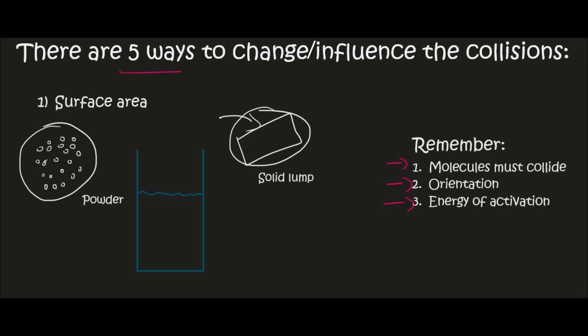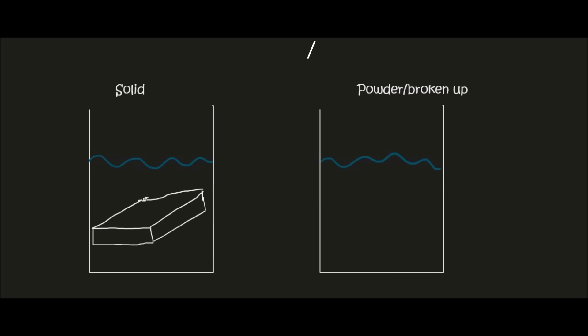With the solid, it's only the particles on the very outside that can be influenced by the surrounding water. The particles in the middle won't be affected until all of the solid around them has been dissolved first. Whereas if we break everything up, each particle becomes exposed to the water, including particles that were originally not exposed. So when you break a solid up into a powder, you drastically increase the number of particles that are exposed at any given time.